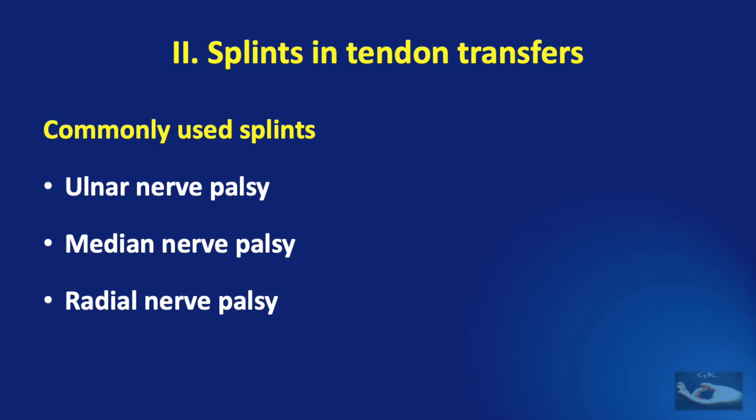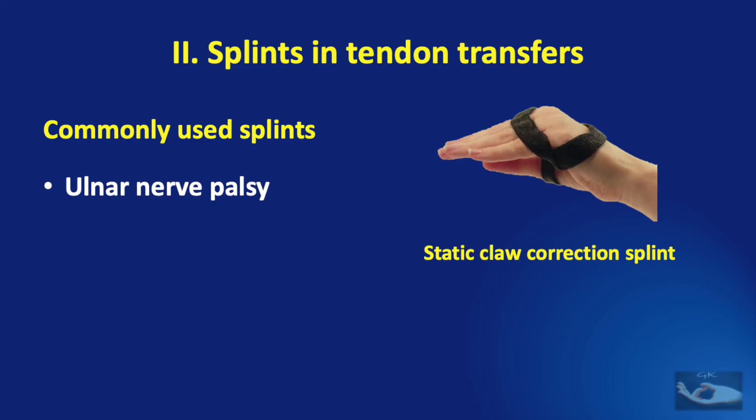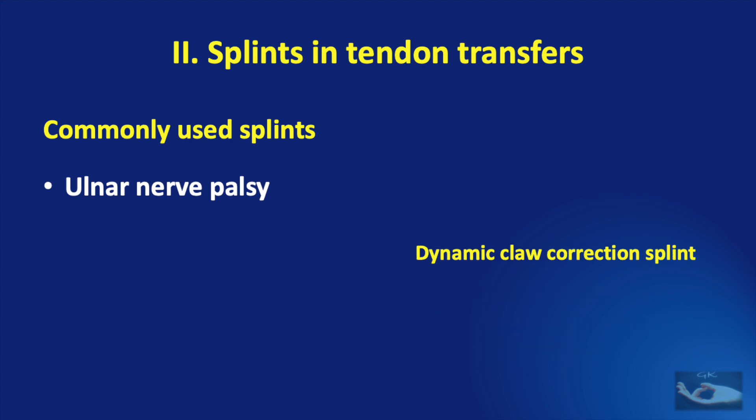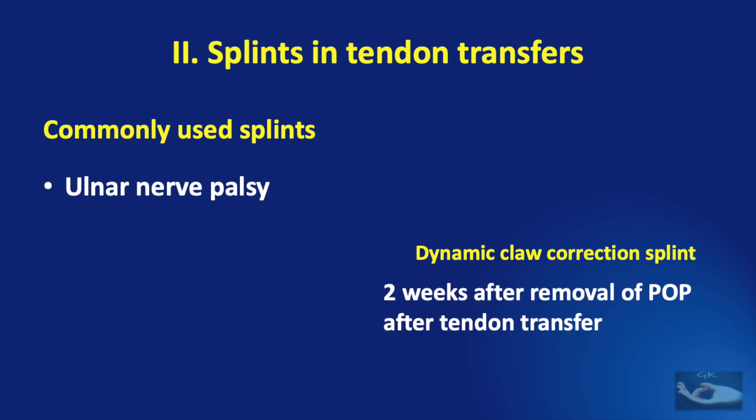The role of splints after tendon transfers could be in the form of static splints or dynamic splints. In ulnar nerve palsy, the static claw correction splint can be used for protection after removal of the POP following tendon transfer; this splint is used for 2 weeks but is continued as a night splint for a total of 4 weeks. The dynamic claw correction splint is used 2 weeks after removal of the POP, when the static claw correction splint is discarded, to help strengthen the tendon transfer.